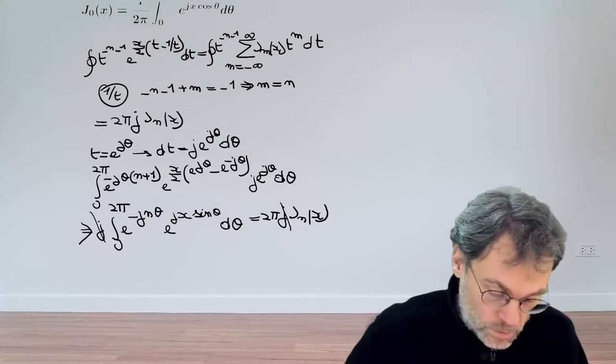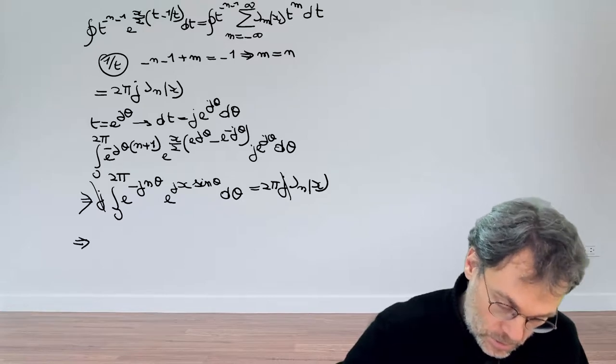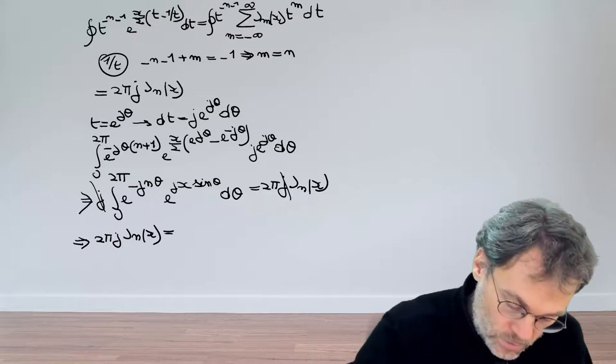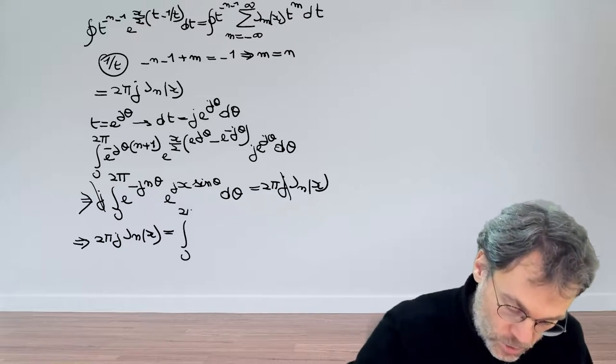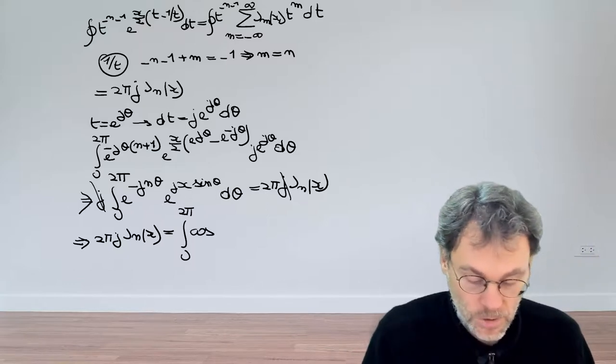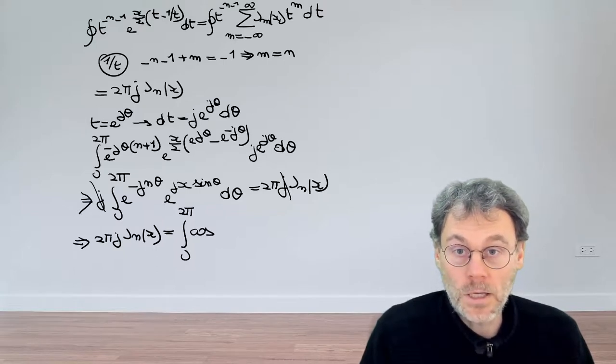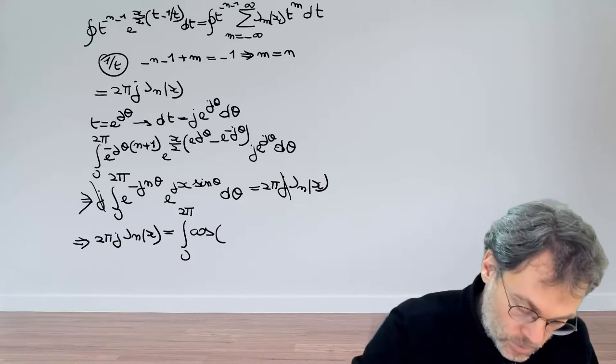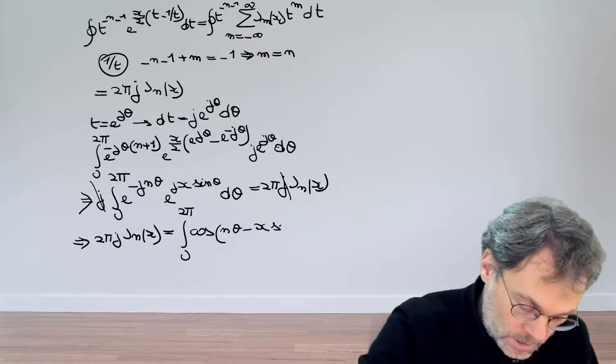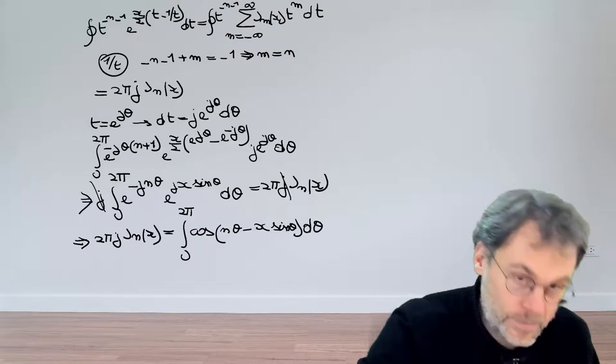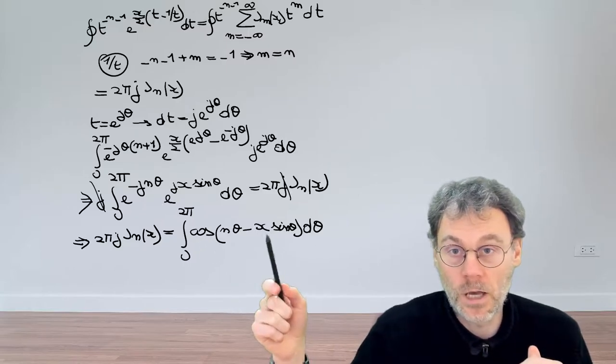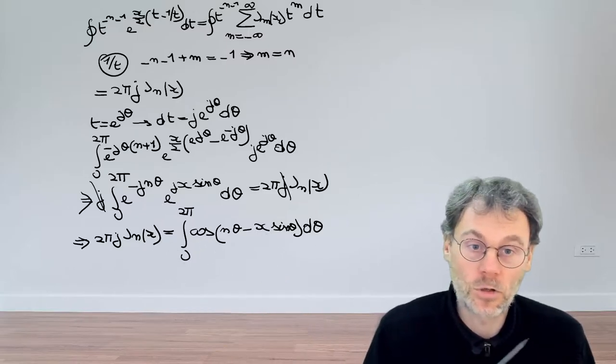Whereas here we have something that only has a real part after getting rid of the j. So we can conclude from that that 2πj_n of x should only be equal to the real part of that contribution. So namely the cosine of the argument of that complex exponential. Since the cosine is even we can also flip the sign of the argument to make it a little bit more aesthetically pleasing. So that becomes nθ minus x sine θ dθ, which is an integral representation involving a cosine of a sine for the Bessel function of order n.